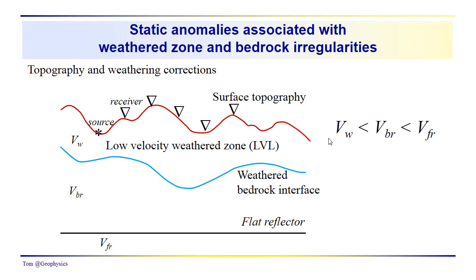So in general the velocity model that we're working with is that the velocity of the weathered zone is less than the velocity of the bedrock, and it's less than the velocity of the underlying formations beneath this flat reflector. We often refer to it, or abbreviate it, as the LVL for low velocity layer.